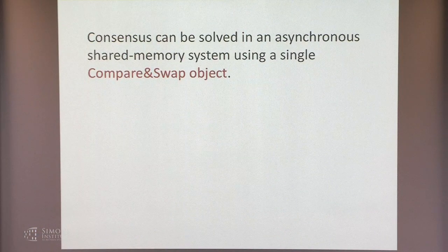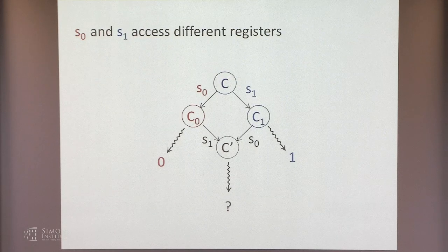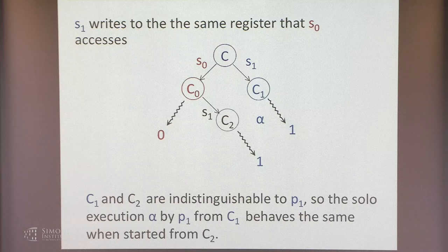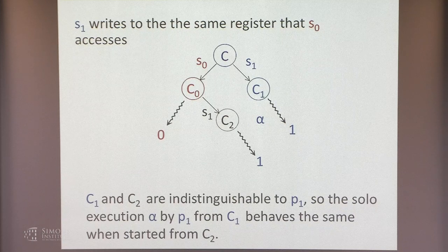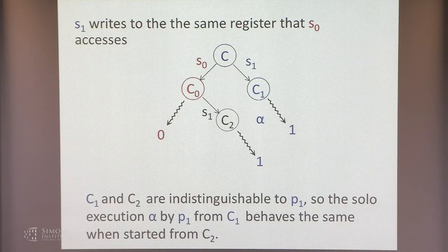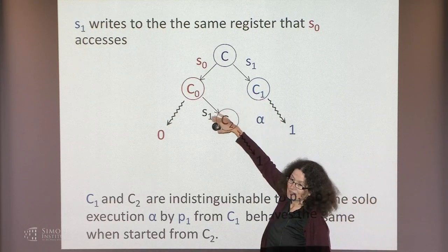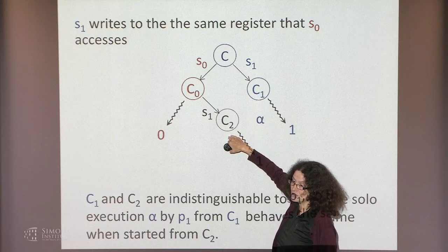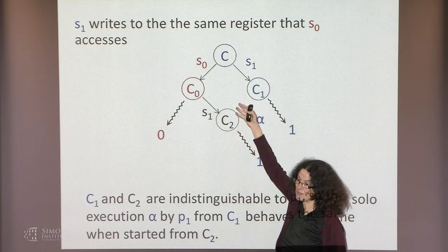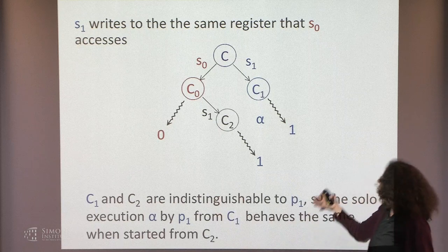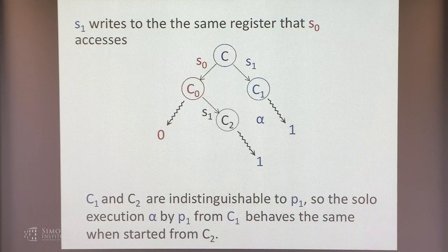A student asks about the three cases: they access different registers, they read the same register, and at least one of them writes to that register. In the write case, it doesn't matter what value is written — whatever P0 writes, P1's write s1 then overwrites that register, so the value is the same in both cases.